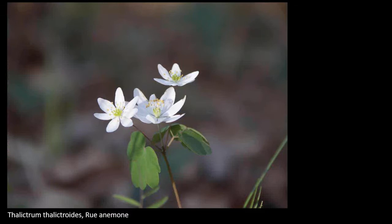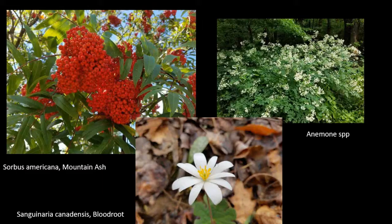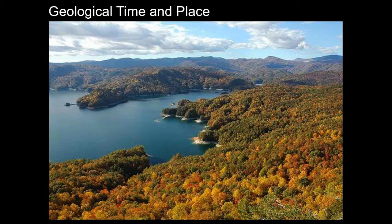Rue anemone is a plant I love for its form and function — the way it trembles with the slightest breeze and flowers in February down here in the South. Mountain ash is a plant that should be in the nursery trade and we're working with vendors to make it available. Blood root is always part of our woodland spring ephemerals, along with another species of rue anemone in the upper right.